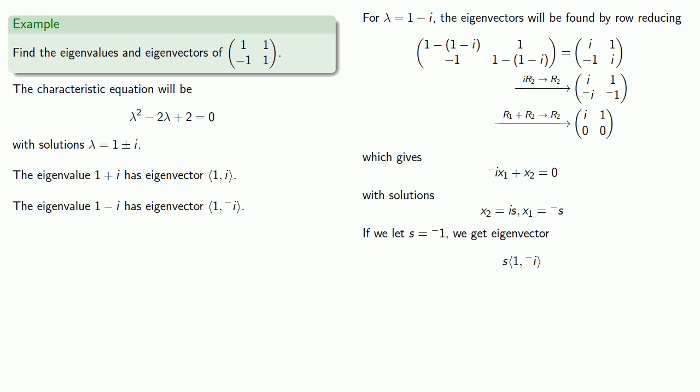And something that's worth noting here is that our eigenvalues are complex conjugates and our eigenvectors are also complex conjugates. And you might ask yourself, self, is this a coincidence?